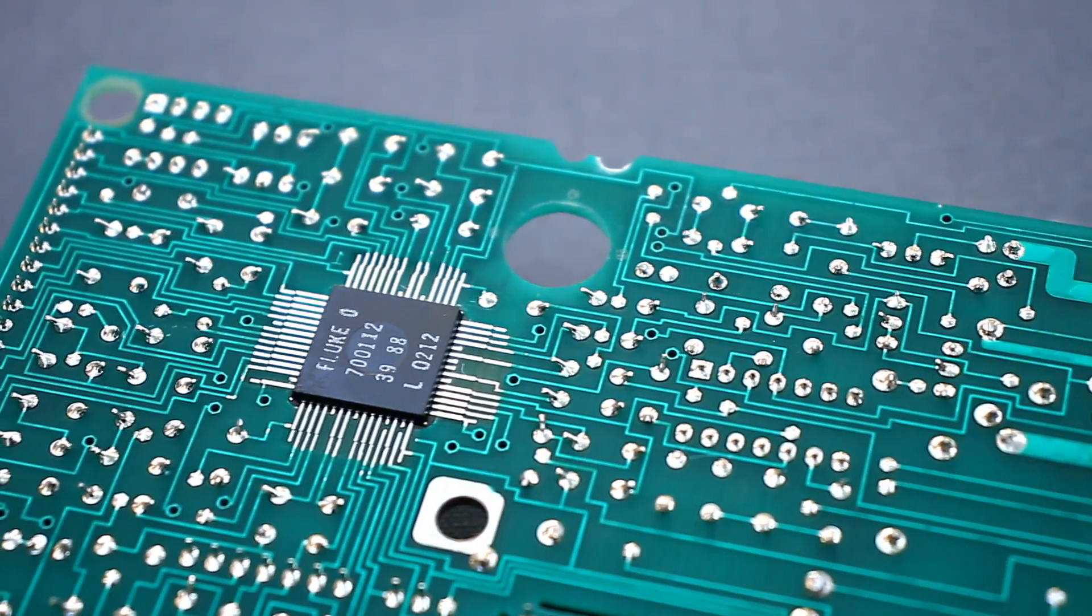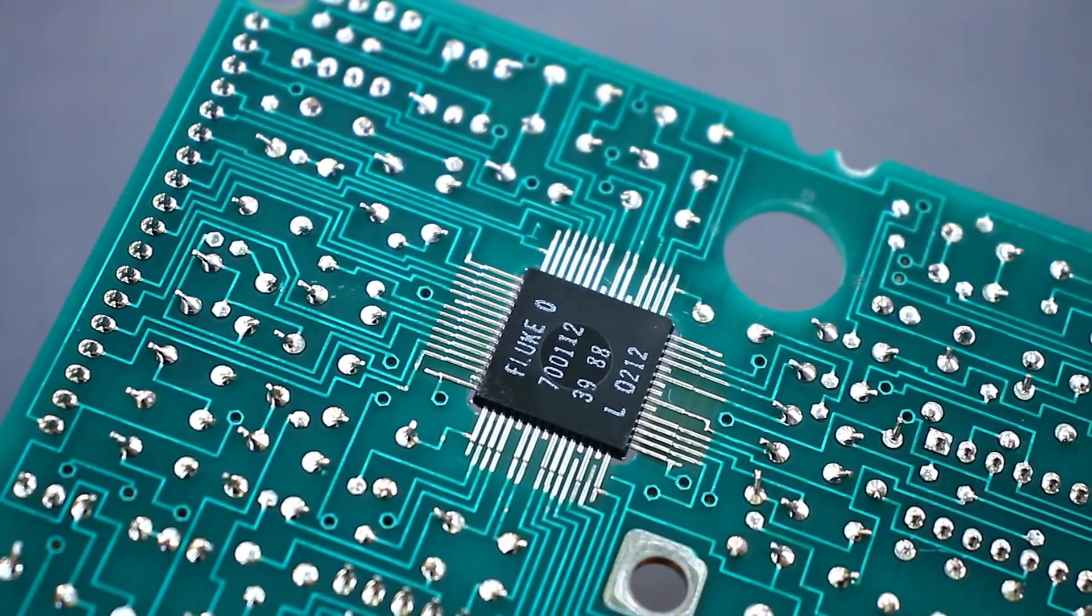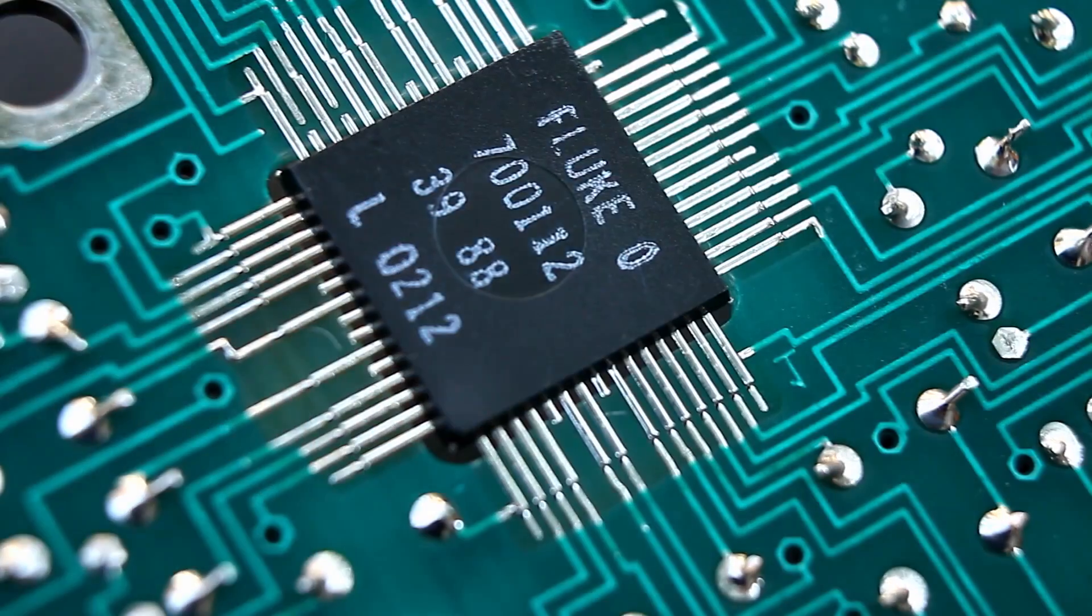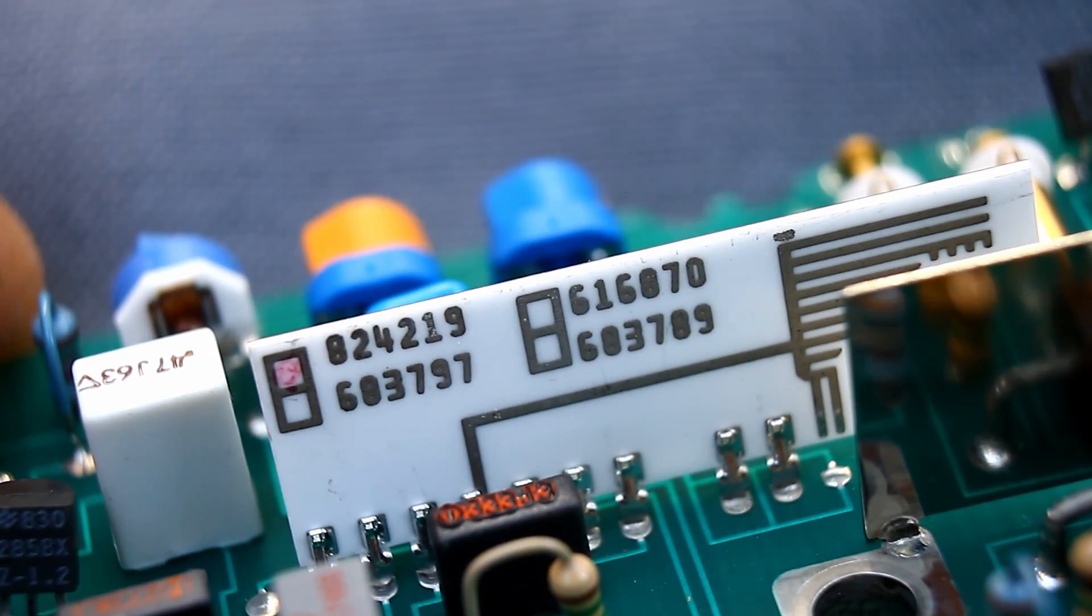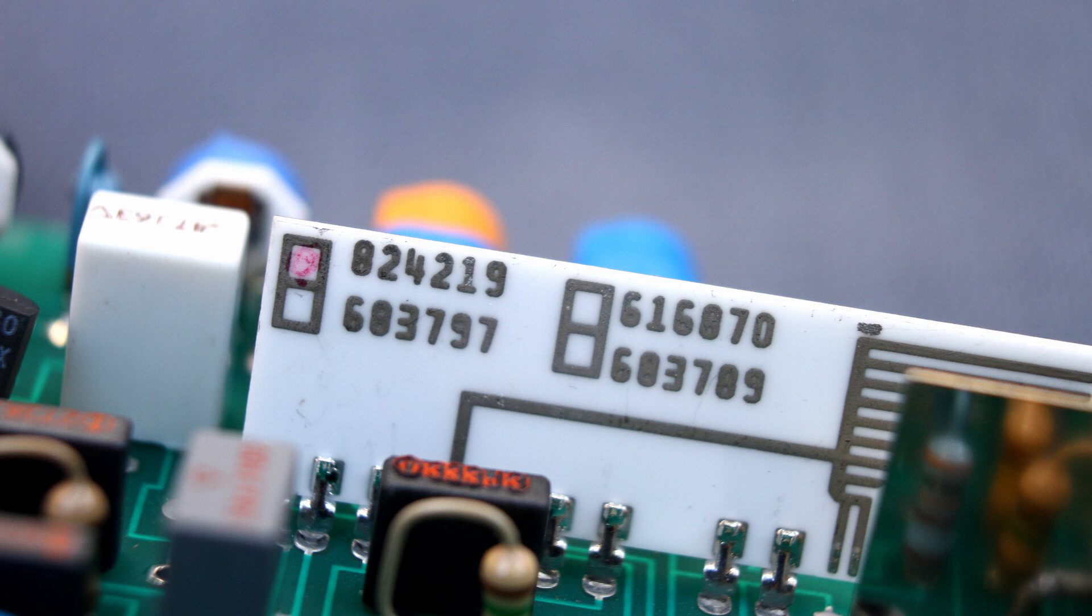This chip marked Fluke 70-112 is the brain of our multimeter or its analog-to-digital converter. It is responsible for all measurements, signal decoding, auto-range, etc. This ceramic rectangle is a precision resistor assembly that is used as voltage dividers.